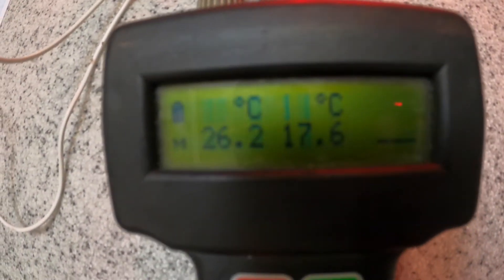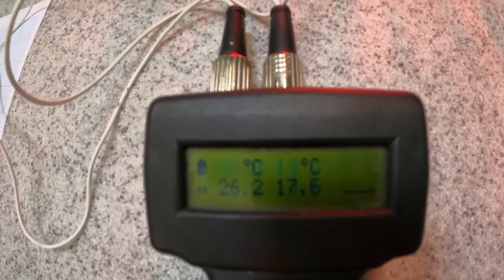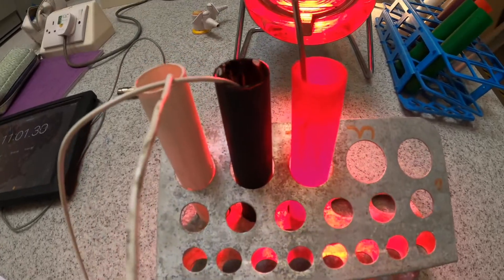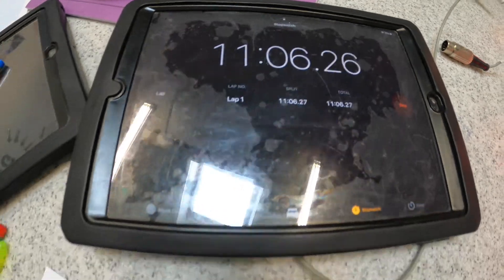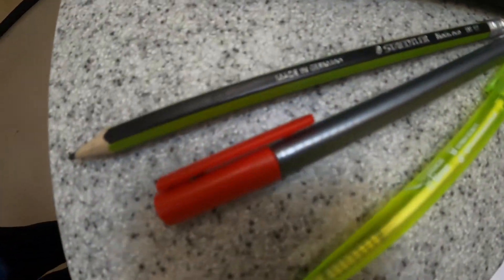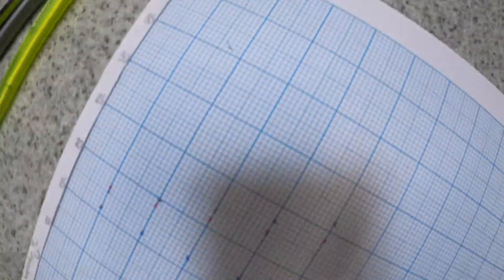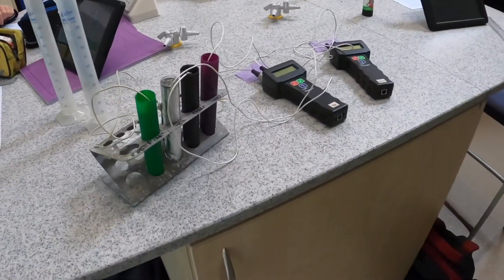So we are seeing a temperature increase here: 26.2 degrees on the black test tube and only 17.5 on the white. So we can see that black is absorbing far more infrared radiation and therefore heating up the water more.